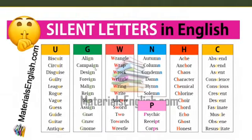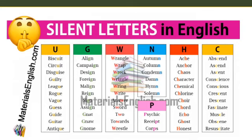Here are a few other words with silent letters in English. Silent U — 'biscuit': it's 'biscuit,' not 'biscuit.' You know the sound of U, so it's 'biscuit.' 'Circuit,' 'disgust,' 'guilty' — not 'guilty,' it's 'guilty.' 'League,' 'rogue,' 'vague,' 'guest,' 'guide,' 'guitar.' In none of these words do we pronounce the sound of U. That's why U is silent here.